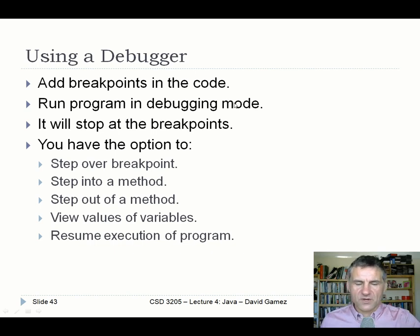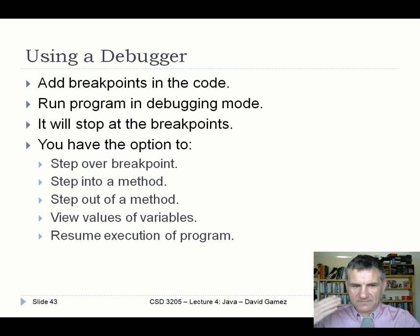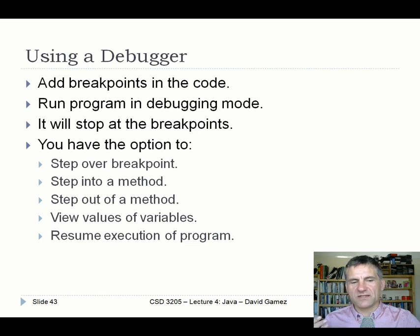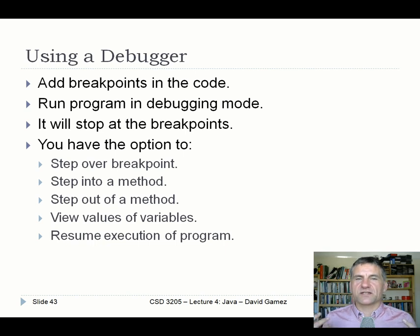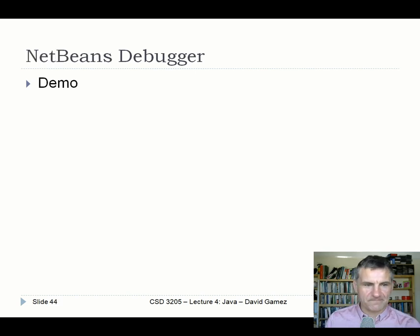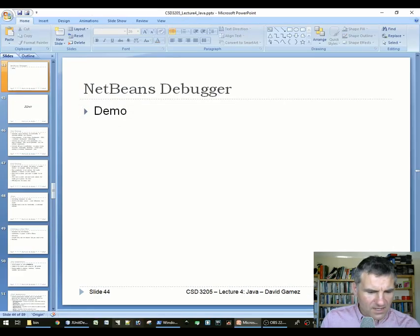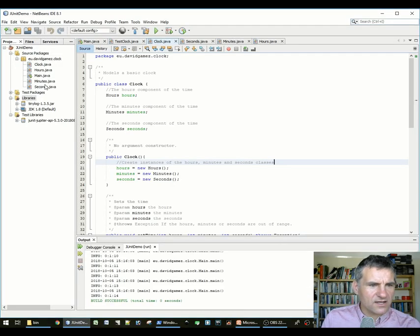With a debugger, you add breakpoints in the code, then run the program in debugging mode, and the program's execution will stop at the breakpoints. Then you have the option to step over the breakpoints, step into a method, step out of a method, view the values of variables, and resume execution of the program. It's a great way of running the program at your own speed so you can look into the program and see what it's doing.